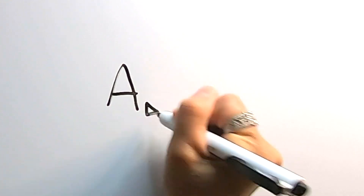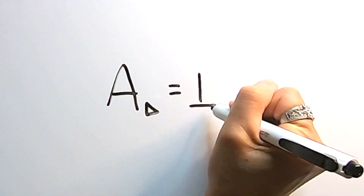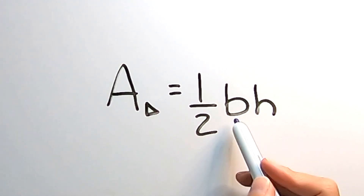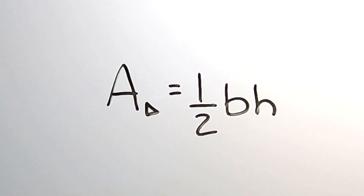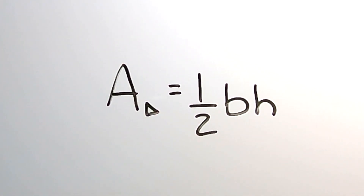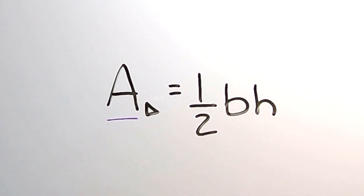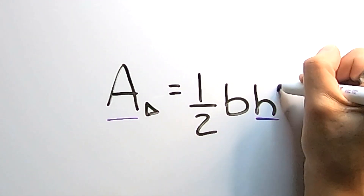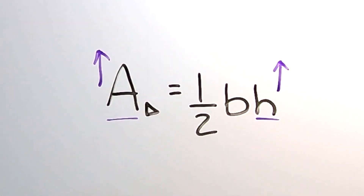Now let's look at a math formula: the area of a triangle, which is equal to one half base times height. I only have to look at the variables I'm determining relationships among, so I don't have to worry about any constants like one half. The relationship between area and height — they're on opposite sides of the equal sign and both in the numerator, which means they are directly related. As the height increases, the area will increase.